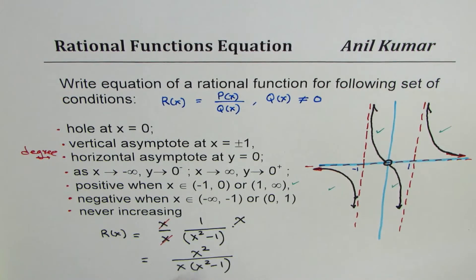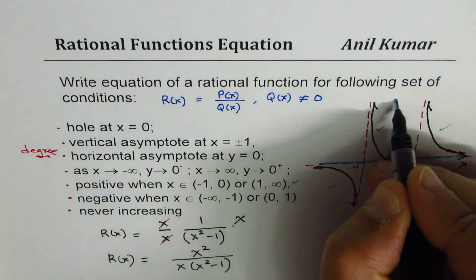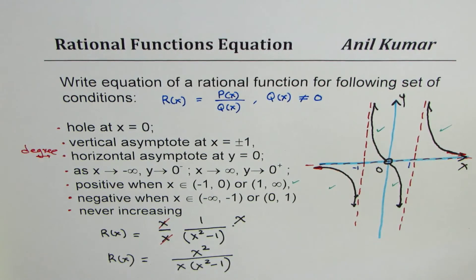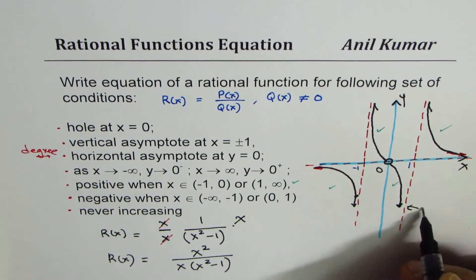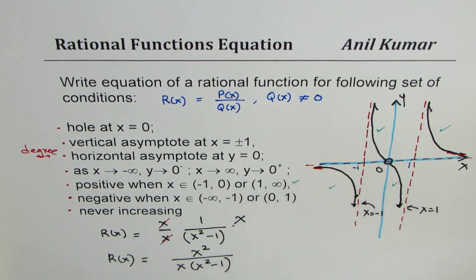So r(x) = x² / [x(x²−1)] is the rational function satisfying all conditions. The vertical asymptotes are at x = 1 and x = −1, as already marked on the graph. I hope that helps — we'll take up a few more videos on writing equations of rational functions from given conditions. Thanks and all the best.